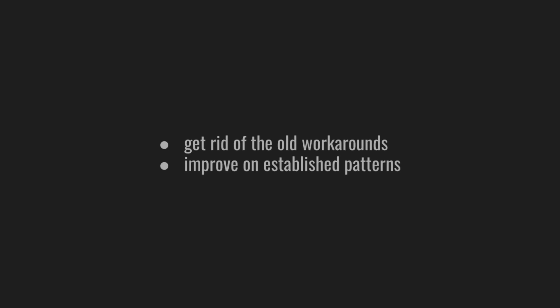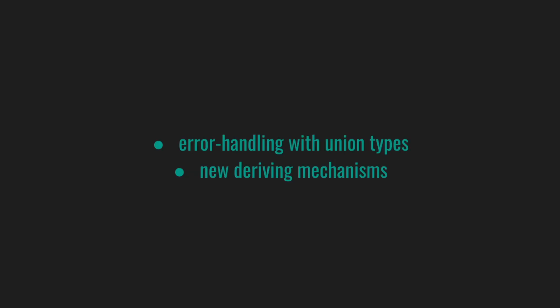Scala 3 rewrite allows you to get rid of old workarounds and improve on established Scala 2 patterns. For instance, I was happy to try error handling with union types and use new deriving mechanisms, but I'm still trying to figure out a more ergonomic usage for enums. And now that we're done with the core, let's talk about the side quests.